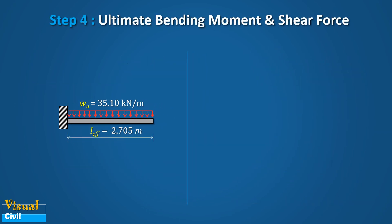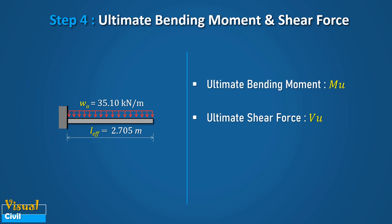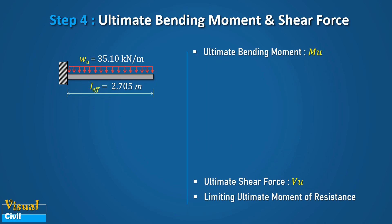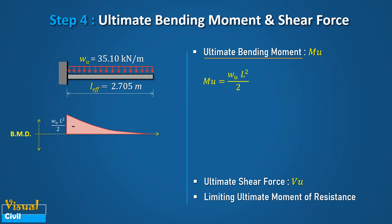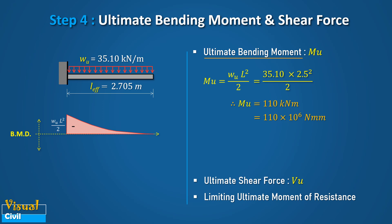In step 4, we will compute the ultimate bending moment and ultimate shear force due to design load. We will also calculate the limiting ultimate moment of resistance of the initially assumed cross section. The maximum bending moment for the cantilever beam is WL squared by 2 at the support. By putting in the values of design load and span, we get MU equal to 110 kN·m.